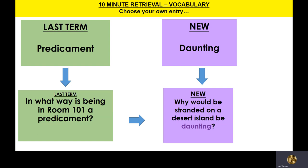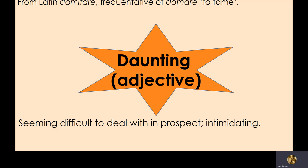What's a predicament? It's a problem or a tricky situation, and cast you on my back to dystopia. In what way is being in Room 101 a predicament? You'll remember the torture chamber in the basement of Winston's workplace in 1984. Why is it problematic if you find yourself in there? And daunting means something difficult to deal with, intimidating.